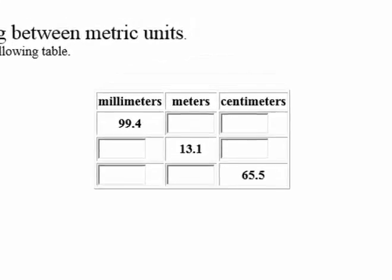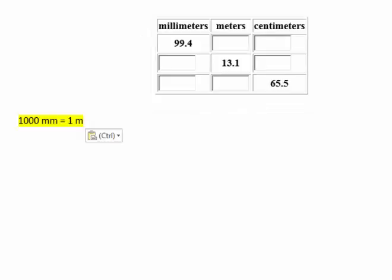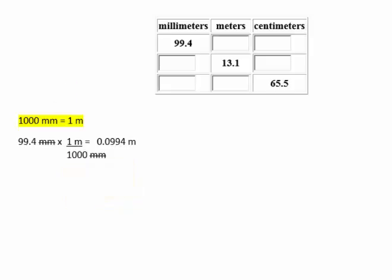First, we need to convert 99.4 millimeters to meters. I'll begin by writing the conversion factor between millimeters and a meter — there are 1,000 millimeters in one meter. Setting up the problem using dimensional analysis, we multiply 99.4 millimeters by the conversion factor 1 meter over 1,000 millimeters. The millimeter unit cancels, and the math gives us 99.4 divided by 1,000, which is 0.994 meters.